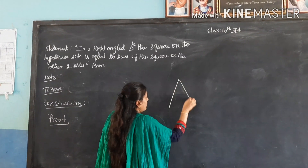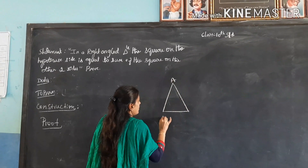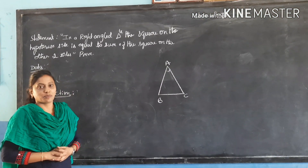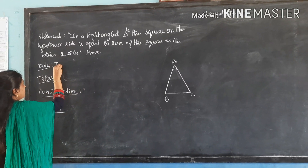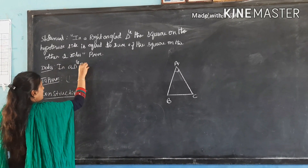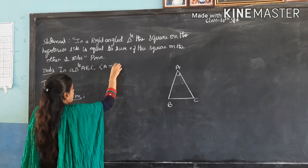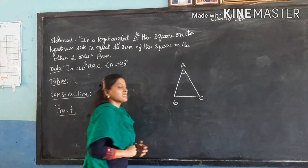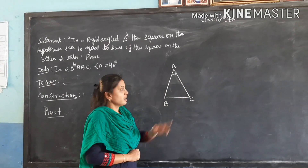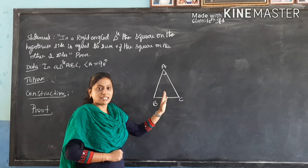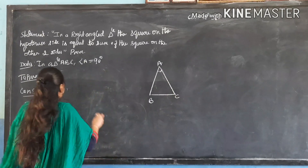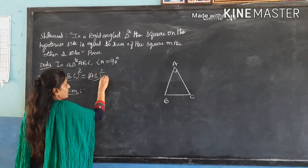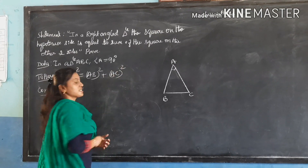Here is the formal statement of the Pythagoras theorem: in a right triangle, the square on the hypotenuse side is equal to the sum of the squares on the other two sides, which we have learned in our demonstration. So I am going to consider triangle A, B, C where angle A is 90 degrees. What is the data in triangle ABC? And what do I have to prove? The square on the hypotenuse side is the sum of the squares on the other two sides. The side exactly opposite to 90 degrees is called the hypotenuse side. Therefore, BC² = AB² + AC².